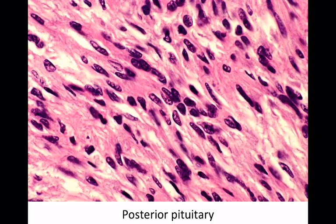The posterior lobe is more of a neural organ — it comes from neural ectoderm and has long, spindly neural-looking cells. These cells don't make hormone; they store hormone made by the hypothalamus. The two hormones stored there are ADH and oxytocin. There are a couple of syndromes associated with this, but most attention in pituitary disease is focused on the anterior lobe.